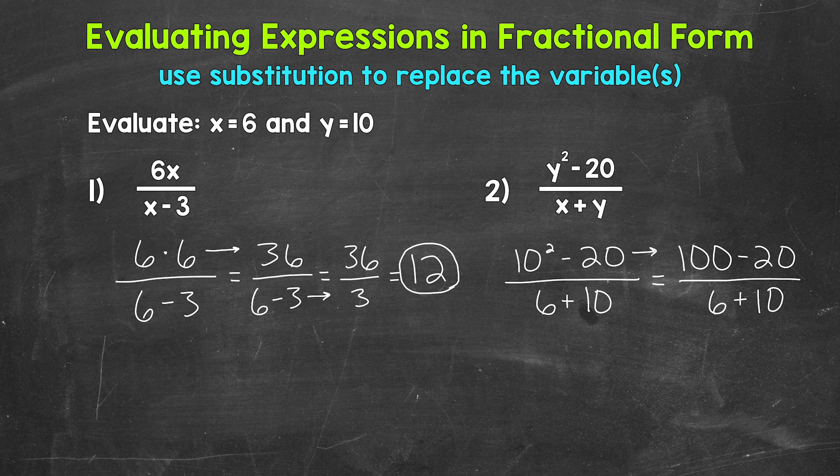So we have 100 minus 20. Let's continue down here. So subtract 100 minus 20. That equals 80 over 6 plus 10.